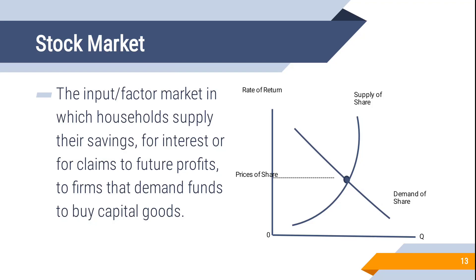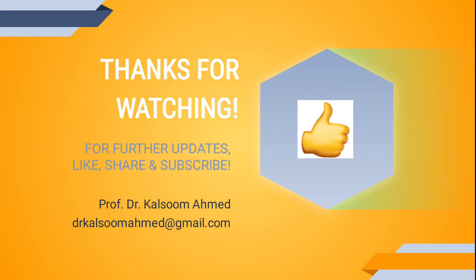The stock market is where public limited companies' shares are bought and sold. Buyers and sellers are both available, and that money is used by public limited companies to generate more profit — benefiting both the company and the investor. Stock markets also show the health of the economy: if the stock market is rising, it means more companies are making profit, investor confidence is high, and businesses are making abnormal profits.